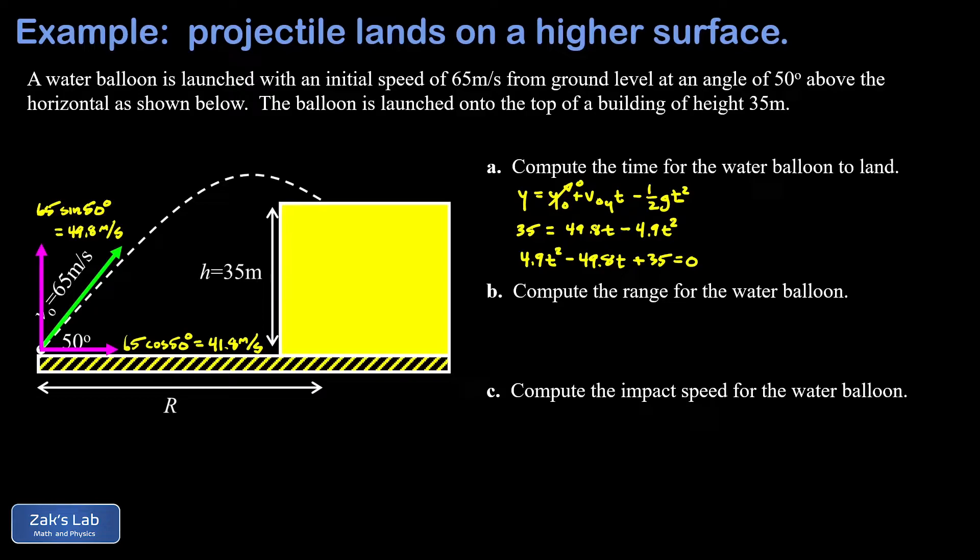Now you may be used to just using a computer utility to solve quadratic equations, but in case your teacher is requiring you to show all the steps of the quadratic formula, I'll go ahead and show that. So t is going to be negative b, that's negative of the linear coefficient—49.8—plus or minus the square root of b squared, so 49.8 squared, minus 4 times 4.9 times c, that's our constant 35. And that's all divided by twice a, in other words, twice 4.9, which we already know is 9.8.